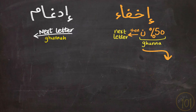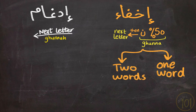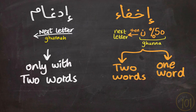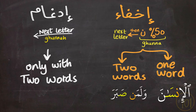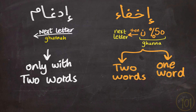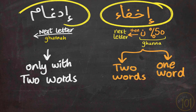One more very important difference: Ikhfa (إخفاء) occurs both inside words and between words. But Idgham (إدغام) never happens within the same word — it only happens between words. For example, الإنسان and وَمَنْ صَبَرَ are both Ikhfa — one within the same word, the other between two words. But مِنْ وَلَيْ is the only possibility for Idgham, happening between two words. Understanding this helps you avoid confusing these two skills.